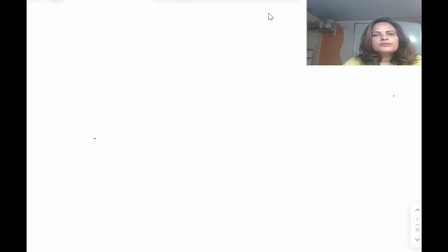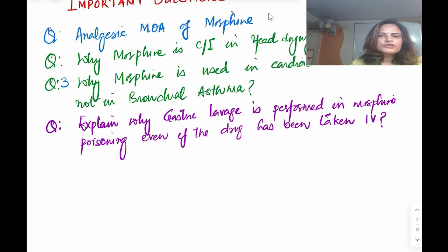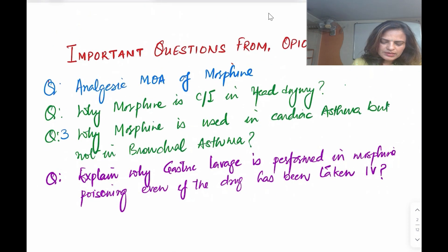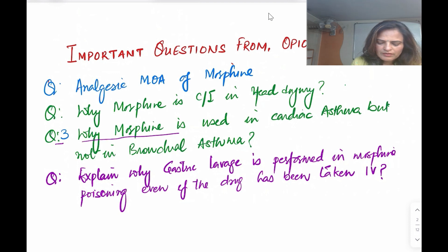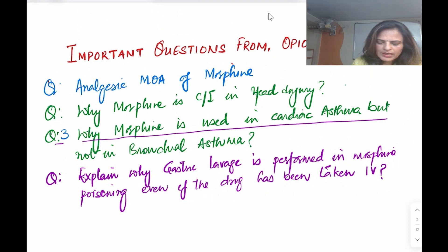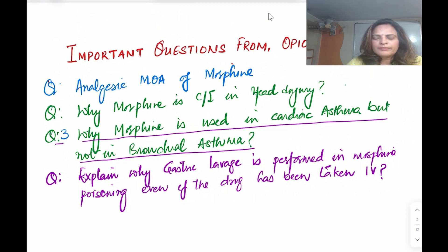Hello students, welcome to my channel. Today I am going to discuss another question on the topic of opioid analysis. The question I am going to discuss today is: why morphine is used in cardiac asthma but not in bronchial asthma.